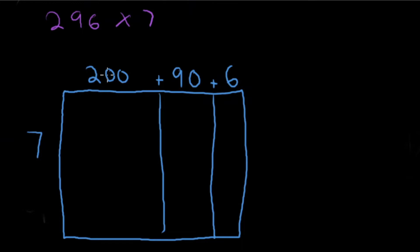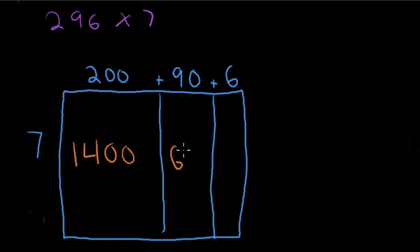Now let's do some multiplication. Seven times 200 — well, 7 times 2 is 14, and we need to attach two zeros, so that gives us 1,400. Next, 7 times 90 — 7 times 9 is 63, attach one zero: 630. Last area model spot: 7 times 6 is 42. Now we need to add all of these up, because with the area model you break a larger multiplication problem into chunks and add to get your final product.